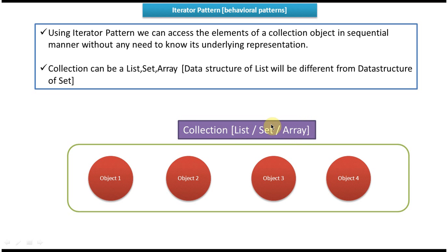The use of the Iterator Design Pattern is: using it, we can access the elements of a collection object — the fixed objects in this container. Suppose we want to get all the objects in this collection in a sequential manner — we can use the Iterator Design Pattern to access the objects one by one and process them. That is the main use of the Iterator Design Pattern.